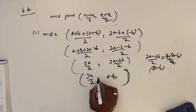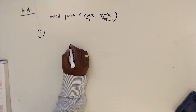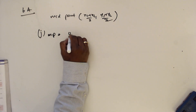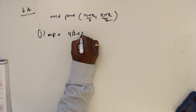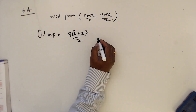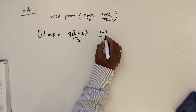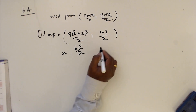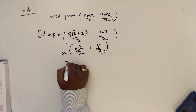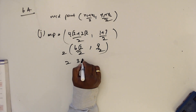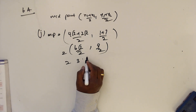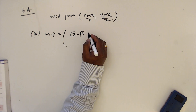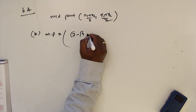You have to keep the answer like this. Part k: midpoint — x values are 4 root 2 plus 2 root 2 divided by 2, and y values are 1 plus 7 divided by 2. This gives 6 root 2 divided by 2 = 3 root 2, and 8 divided by 2 = 4. The midpoint is (3 root 2, 4).